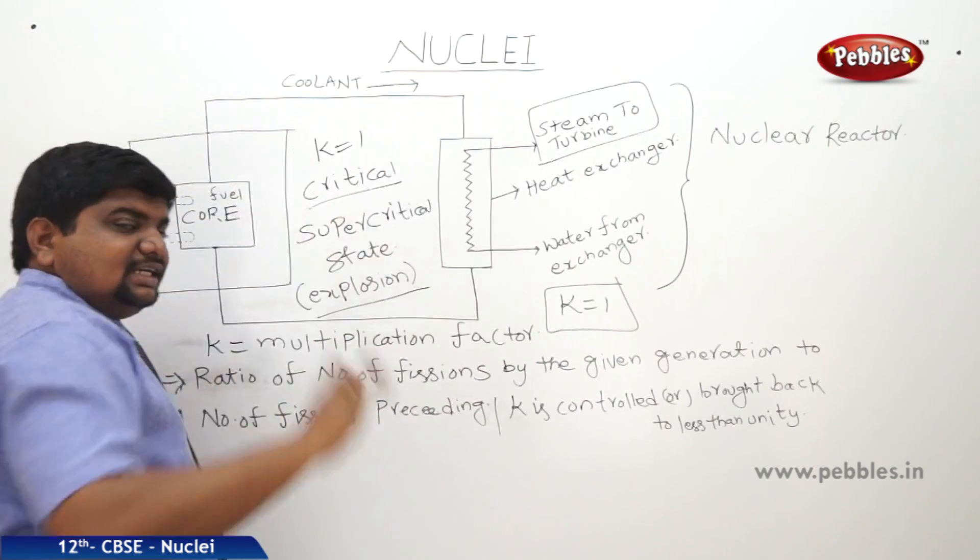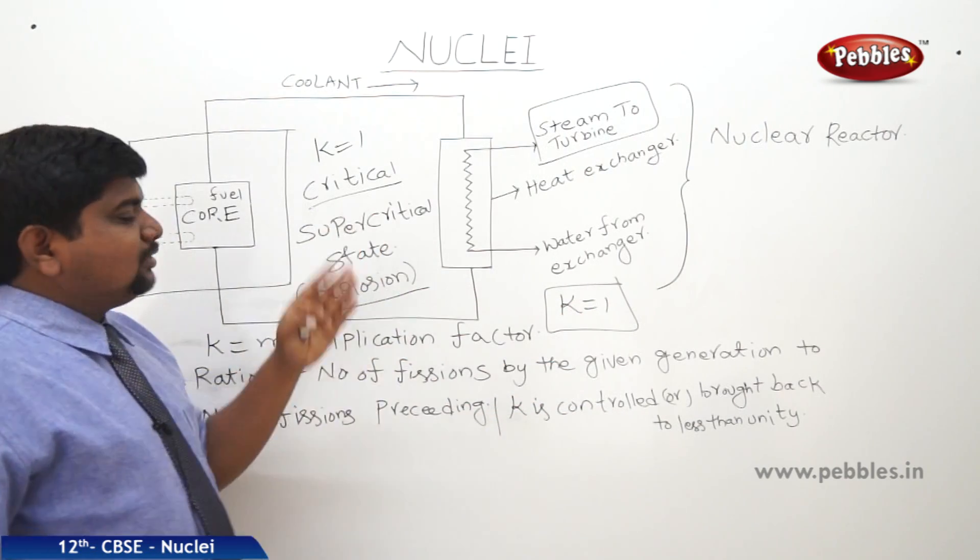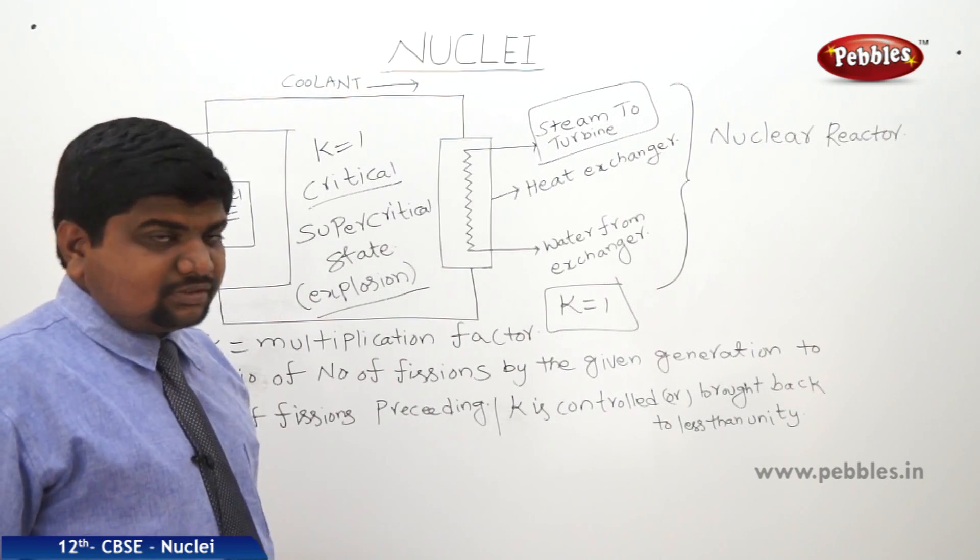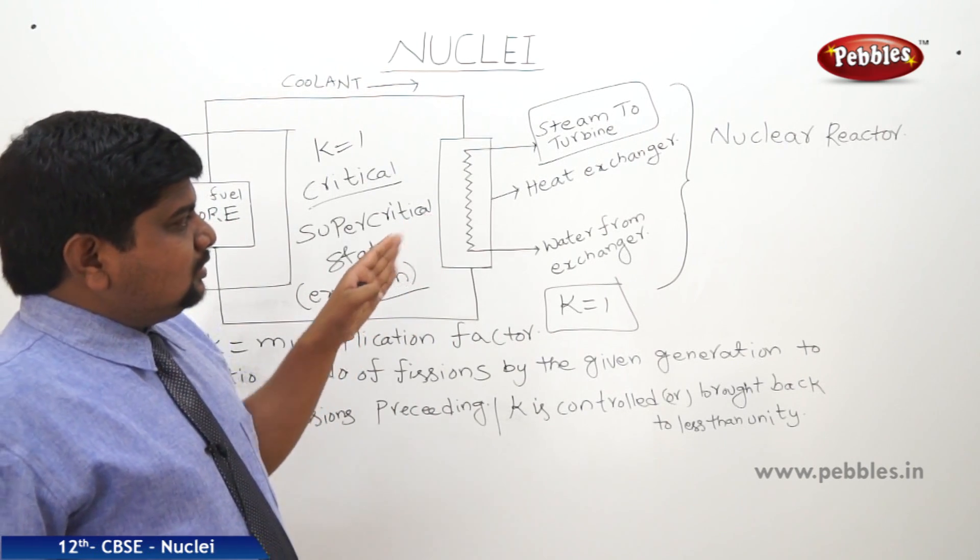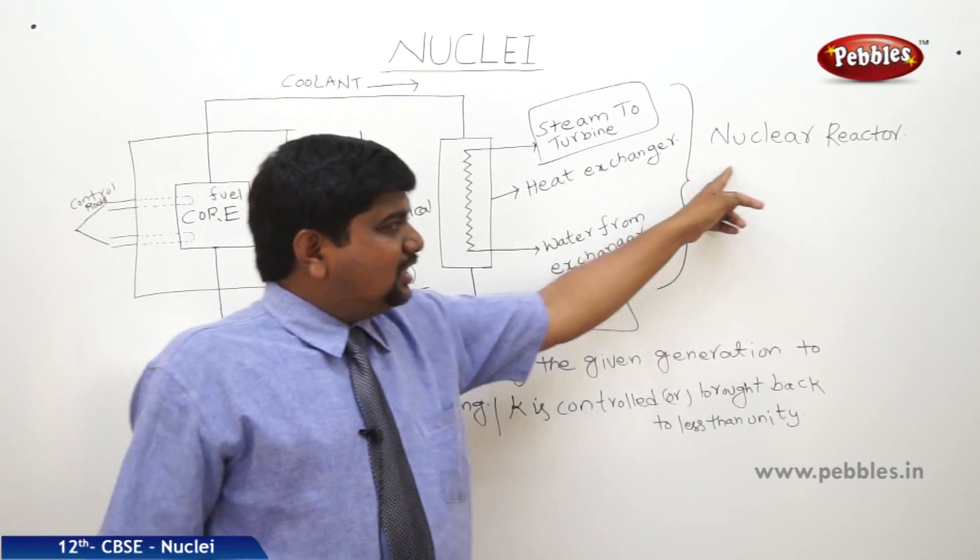K equal to 1 is critical condition, K brought back to less than unity, otherwise the nuclear reactor will be in super critical situation which causes explosion. That's why some suitable steps to control these reactions are needed, then only nuclear reactors are useful.